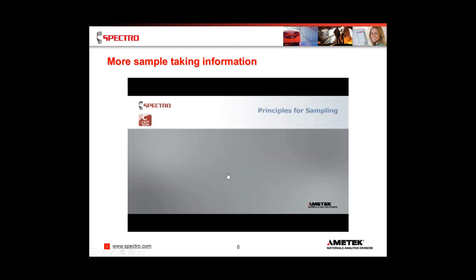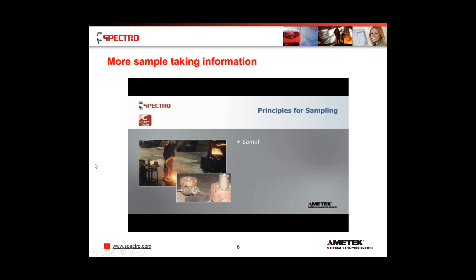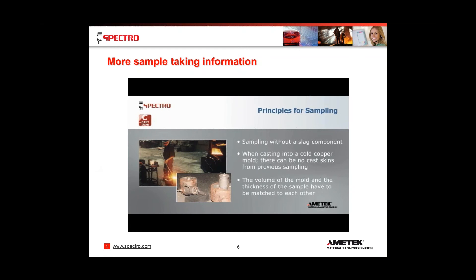A little more on the sample taking method. When taking sampling, be careful not to introduce slag into the component. When casting into a cold copper mold, there can be no cast scans from the previous sampling. The volume of the mold and the thickness of the sample have to be matched to each other. Just briefly on the cleaning of those cast scans — in between each sample, the best method is to clean that mold.